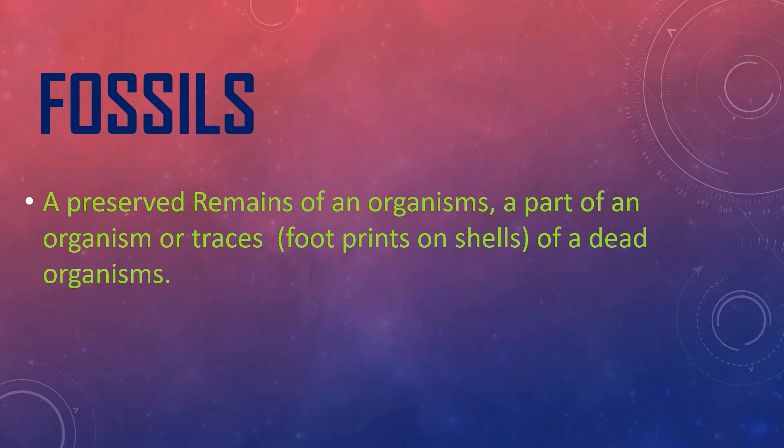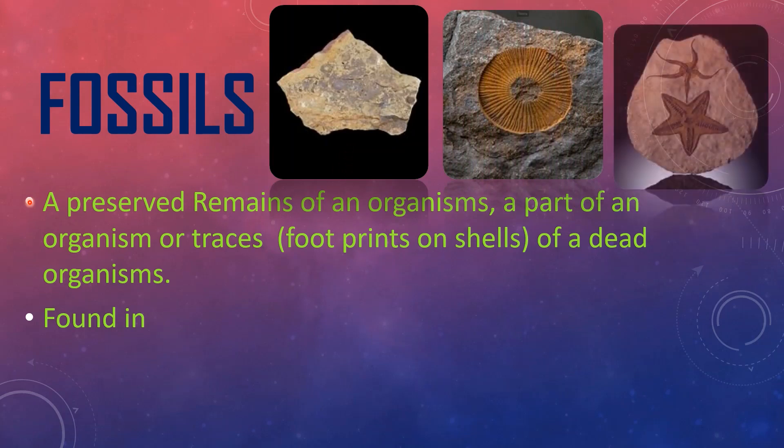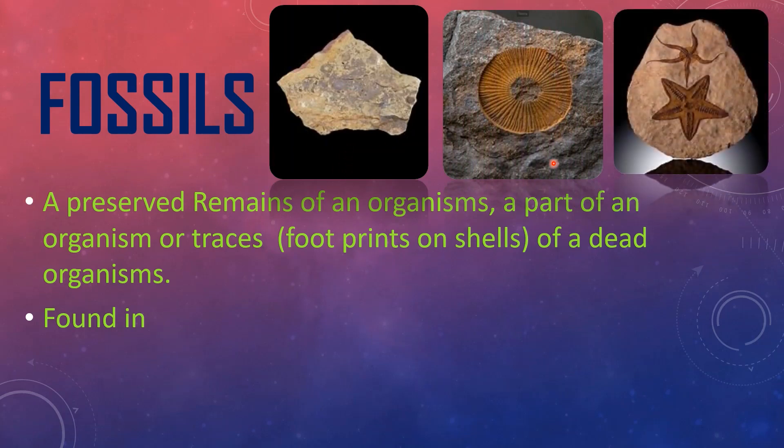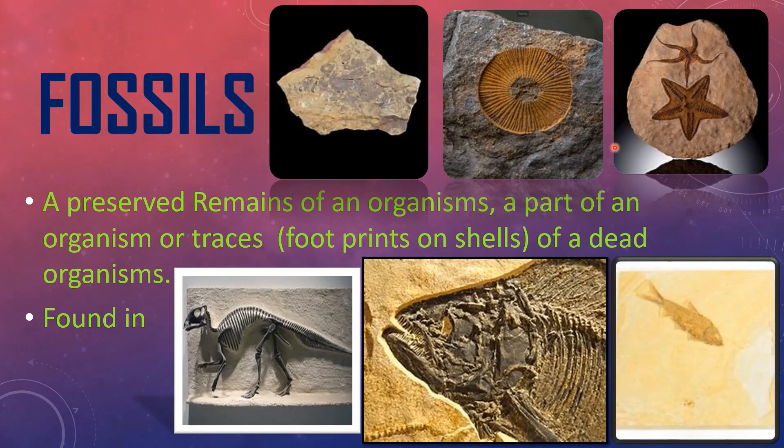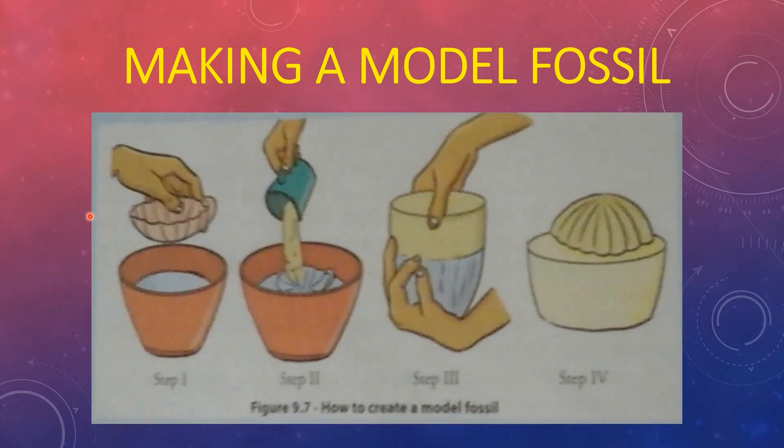Then about fossils. A piece of remains of an organism, a part of an organism, or traces of a dead organism is called a fossil. You can see in these pictures the fossils found in rocks, wood, bones, volcanic ash, and amber. You can make a model of a fossil by pressing a shell or a leaf to clay and drying it.